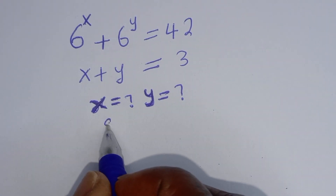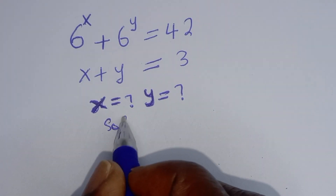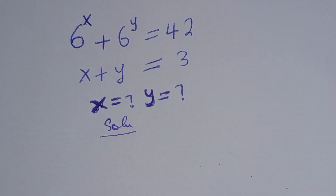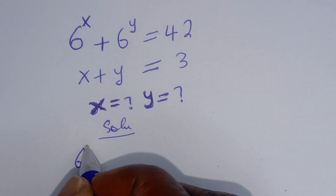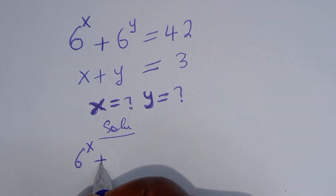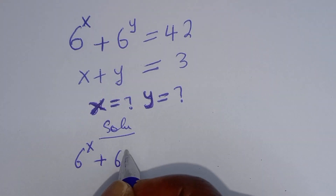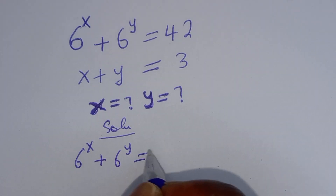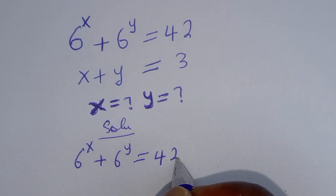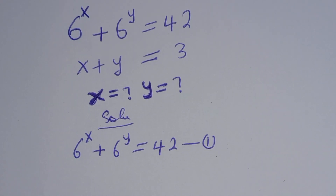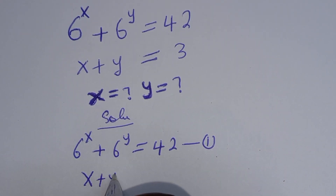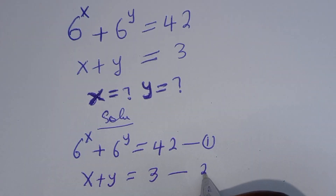Solution. 6 raised to power s plus 6 raised to power y is equal to 42 — let's call this equation 1. x plus y is equal to 3 — let's call this equation 2.